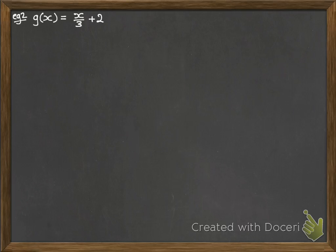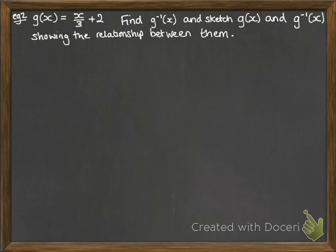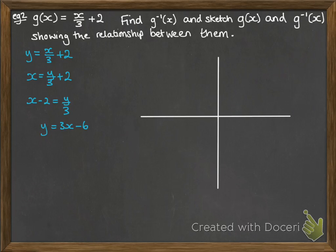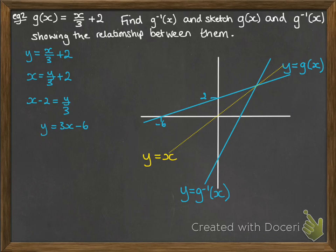Let's do some examples. We've got g(x) = x/3 + 2. We want to find the inverse and sketch it along with showing the relationship between them. Write y equals our function, switch over the x and y, rearrange to make y the subject, and then plot them. There we've got our original function, here is our inverse function, and we can show the mirror line of y = x.